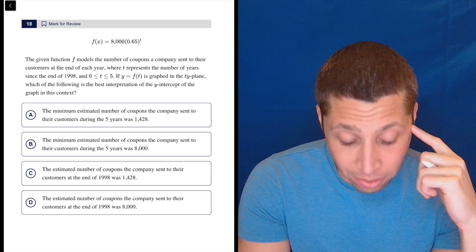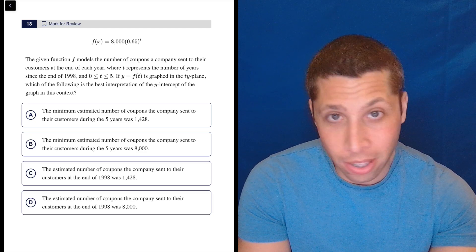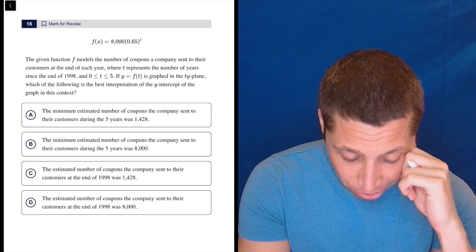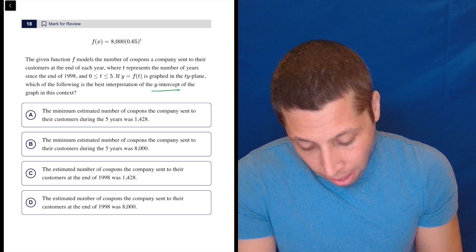If y equals f of t is graphed in the ty plane, it's just the xy plane, they just switched a letter. Which of the following is the best interpretation of the y-intercept of the graph in this context?